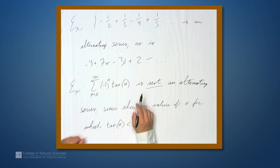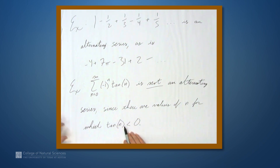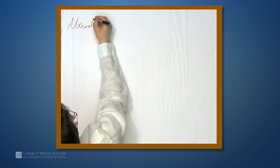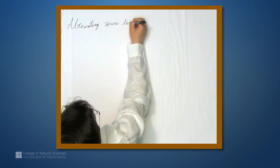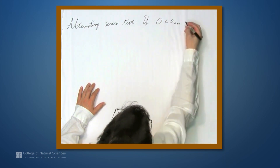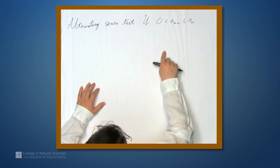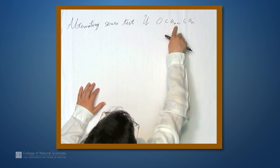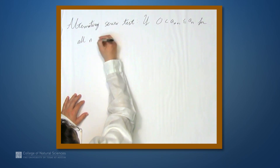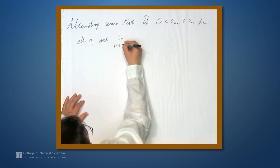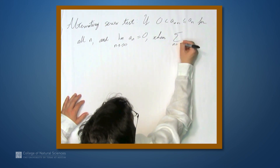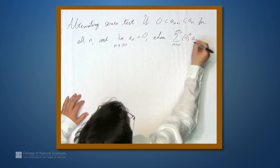There is, however, a very nice test for the convergence of alternating series called the alternating series test. If all of the a sub n terms are greater than 0, and the sequence of a sub n's is non-increasing — in other words, a sub n plus 1 is always less than or equal to a sub n for all n — and the limit as n goes to infinity of a sub n equals 0, then the alternating series, sum from n equals 0 to infinity of negative 1 to the n times a sub n, converges.